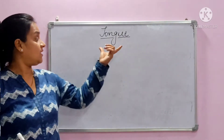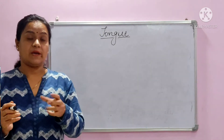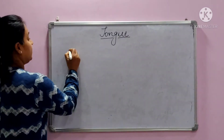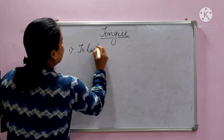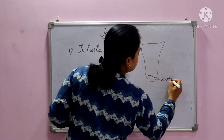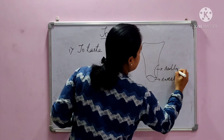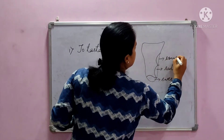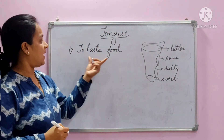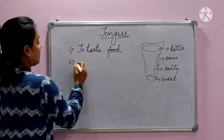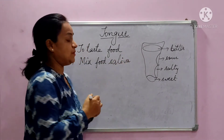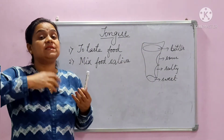The next organ of the buccal cavity is the tongue. The tongue is a muscular organ present in the mouth. It has different taste buds. The first function of the tongue is to taste food. The tongue has different zones — the front for sweet, sides for salty, further back for sour, and at the back for bitter. The second important function of the tongue is to mix food with saliva, making it slippery and easy to swallow.